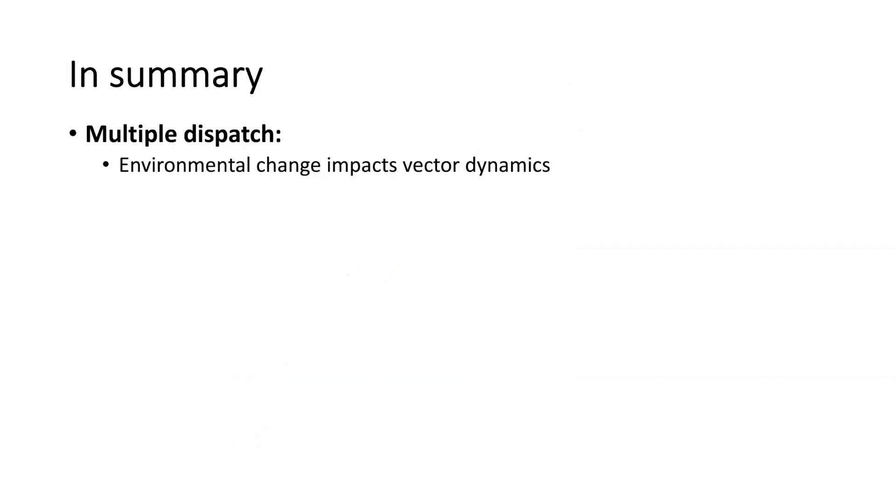In summary, I've shown how Julia's multiple dispatch can be used to explore the ways that environmental change impacts vector dynamics, and how that interaction has implications for both seasonal disease risk and the timing of successful public health interventions.